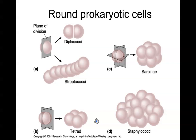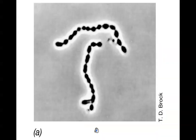The different arrangements often illustrate the planes of cell division — whether it is one plane, two, three, or many. Based on what we've just described for terminology, how would you describe this image of bacteria in this photo?